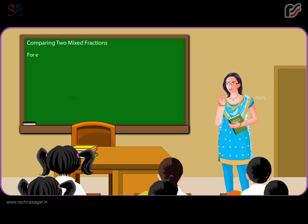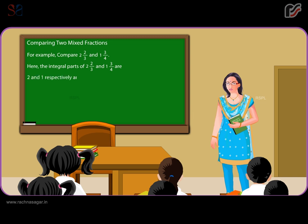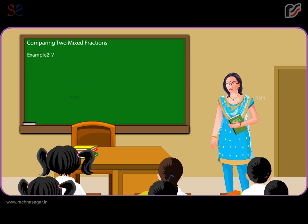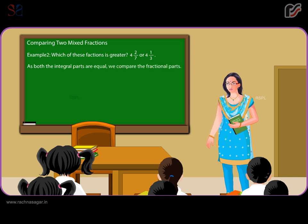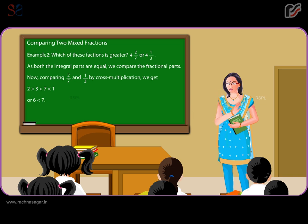Comparing two mixed fractions. For example, compare 2 and 2 by 3 with 1 and 3 by 4. The integral parts are 2 and 1 respectively, and since 2 is greater than 1, therefore 2 and 2 by 3 is greater than 1 and 3 by 4. Example 2: Which is greater — 4 and 2 by 7 or 4 and 1 by 3? As both integral parts are equal, compare the fractional parts. Comparing 2 by 7 and 1 by 3 by cross multiplication: 2 multiplied by 3 equals 6 and 7 multiplied by 1 equals 7. Since 6 is less than 7, 4 and 2 by 7 is smaller than 4 and 1 by 3.